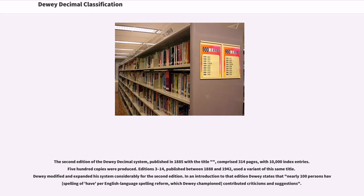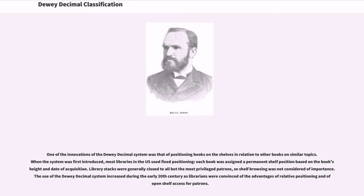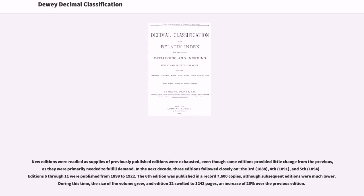In an introduction to that edition, Dewey states that nearly 100 persons, including advocates of English language spelling reform which Dewey championed, contributed criticisms and suggestions. One of the innovations of the Dewey Decimal System was positioning books on the shelves in relation to other books on similar topics. When the system was first introduced, most libraries in the U.S. used fixed positioning — each book was assigned a permanent shelf position based on the book sheet and date of acquisition. Library stacks were generally closed to all but the most privileged patrons, so shelf browsing was not considered of importance. The use of the Dewey Decimal System increased during the early 20th century as librarians were convinced of the advantages of relative positioning and open-shelf access for patrons. New editions were readied as supplies of previously published editions were exhausted, even though some editions provided little change from the previous, as they were primarily needed to fulfill demand.